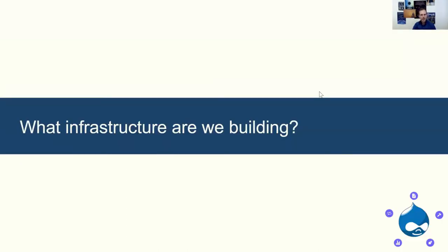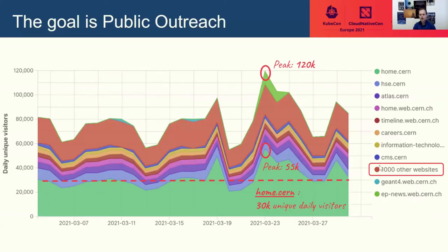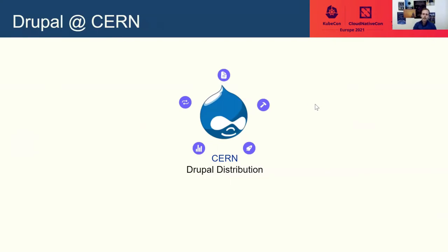So let's see what kind of infrastructure we are building. This is home.cern, our organization's homepage, and it is housed on the infrastructure that we are replacing with this design. Together with about 1,000 and a bit more other websites — all Drupal websites — made by a lot of people around the organization with different requirements, and that every day hosts about 80,000 unique visitors. The peaks can reach even 1.5 times that much.